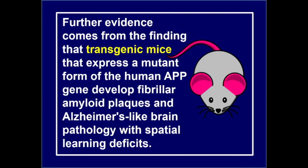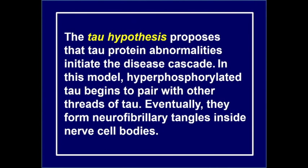Further evidence comes from transgenic mice injected with mutations expressing a mutant form of human APP, which develop fibrillar amyloid plaques and Alzheimer-like brain pathology with spatial learning deficits. The tau hypothesis proposes that tau protein abnormalities initiate the disease cascade — hyperphosphorylated tau begins to pair with other tau threads, eventually forming neurofibrillary tangles inside nerve cell bodies, like a darning thread locking up all the cell mechanisms.